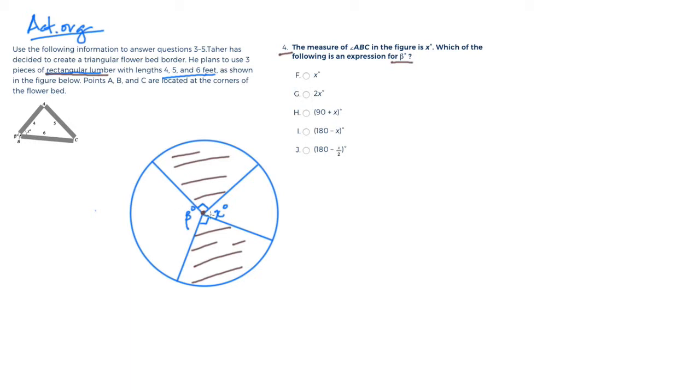So if I have 360 minus— and then that's 90 and 90 would be minus 180— and then it would be minus beta minus X, or you could also say...